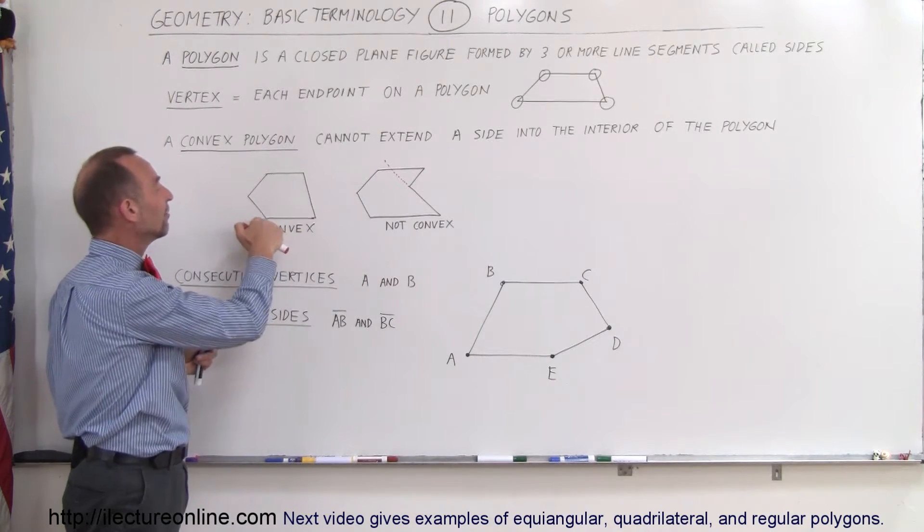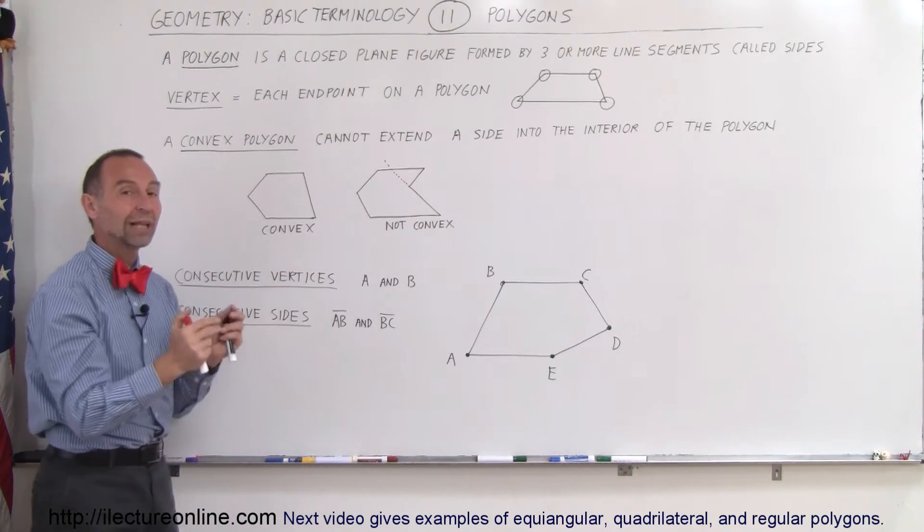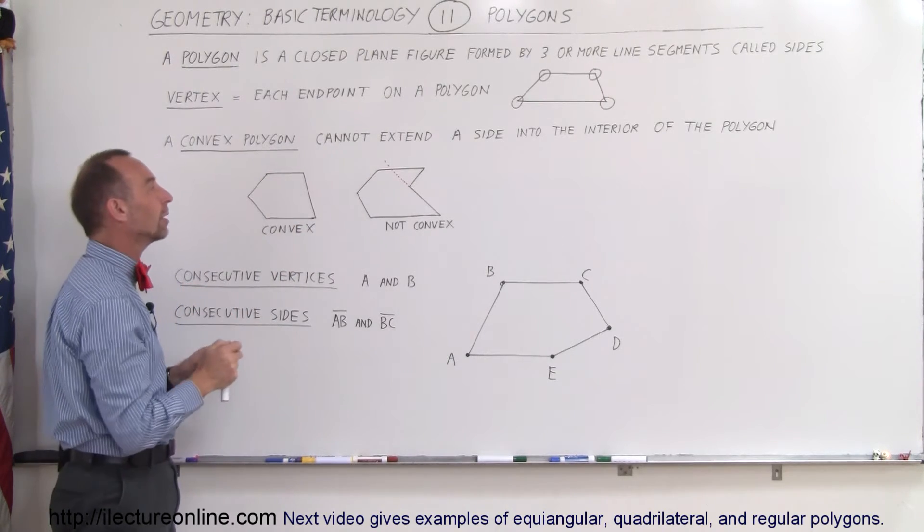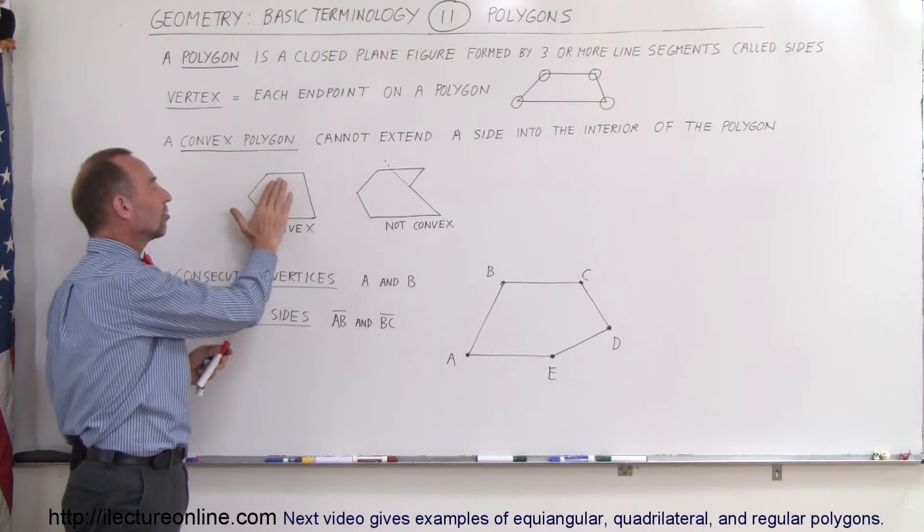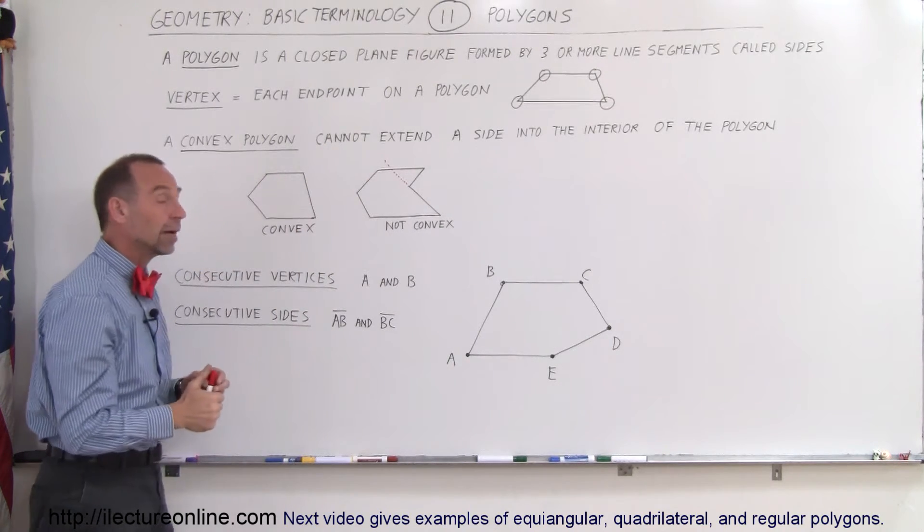You cannot do that here. If you extend any of the line segments, none of the extensions will actually go through the interior of the polygon. So therefore, this is a convex polygon.